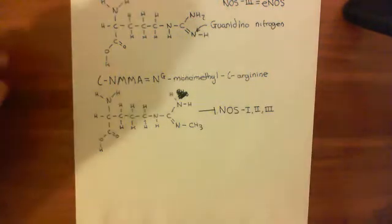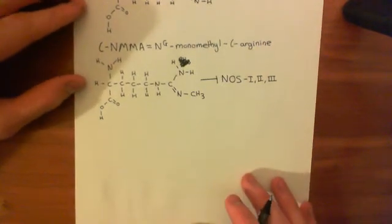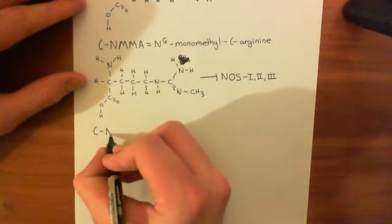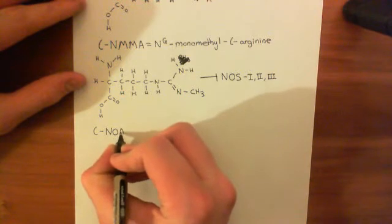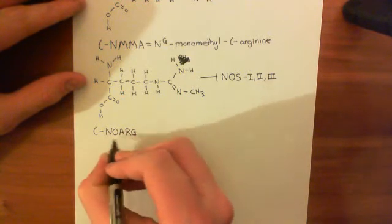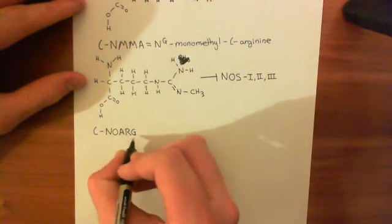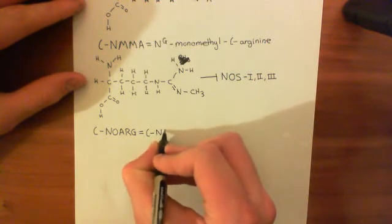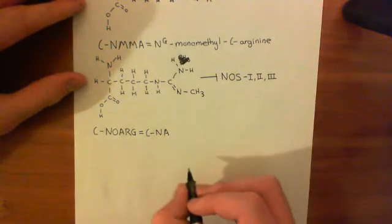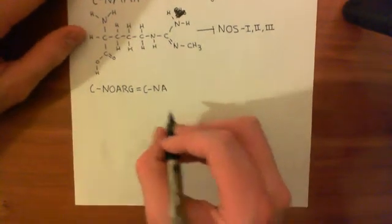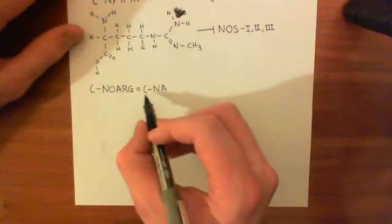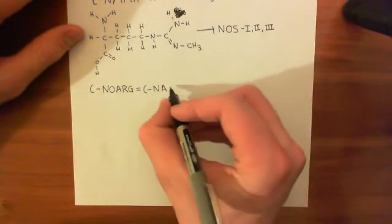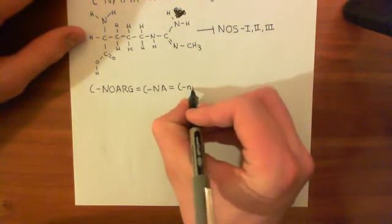The next inhibitor is known as L-nitro-arginine. This used to be known as L-NO-Arg — NO for nitro, Arg for arginine. For some reason it has been renamed L-NA for L-nitro-arginine, which is a slightly odd name since L-NA has for a long time stood for L-noradrenaline. But now L-NA stands for L-nitro-arginine.